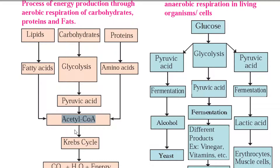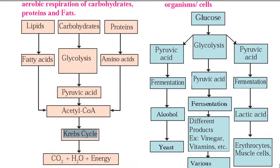This pyruvic acid is further converted into acetyl coenzyme A. You can observe here — acetyl coenzyme A goes inside the mitochondria, where the Krebs cycle, also called the TCA (tricarboxylic acid) cycle, takes place along with the electron transport chain reaction, converting it into ATP, carbon dioxide, and water.